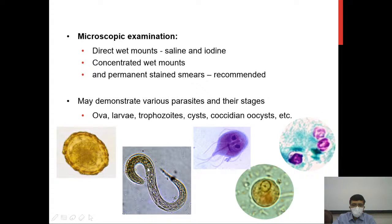Even if you find one parasite, it doesn't mean that is the only parasite present in the intestine. Many times you will find more than one parasite, because the mode of transmission is usually similar in most intestinal parasites — the faeco-oral route. If food or water has been contaminated with faeces, single or multiple parasites may infect you simultaneously, so always look for additional parasites.